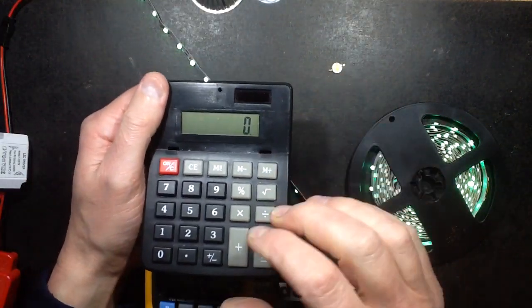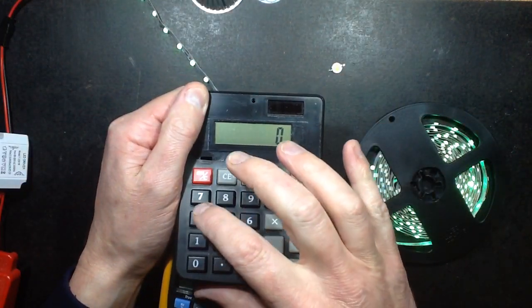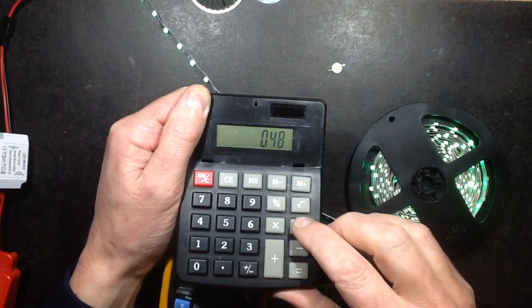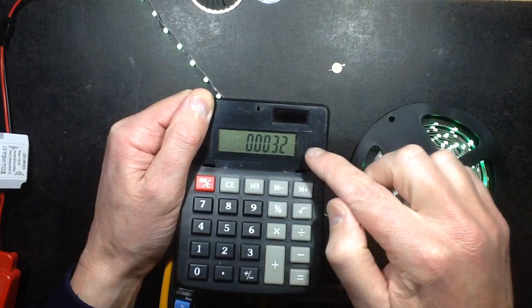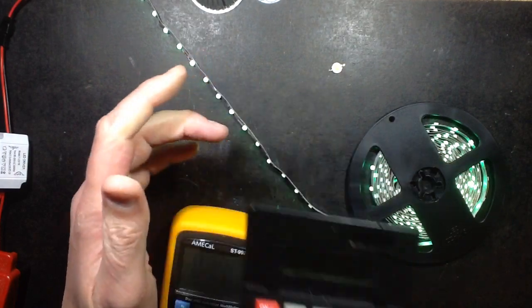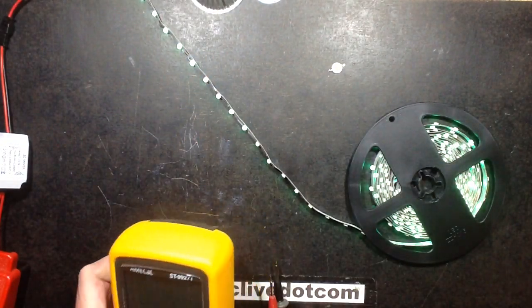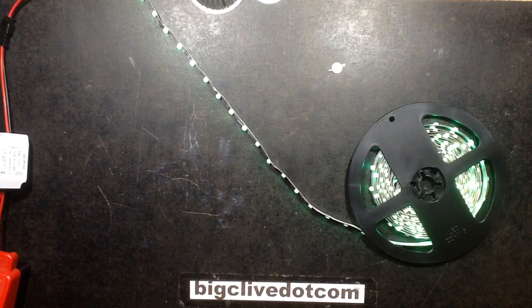I equals 0.48 volts divided by 150 ohms equals 3.2 milliamps. It is almost exactly 3 milliamps passing through each circuit. So that's quite good actually.